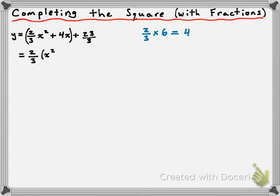Or if you aren't super comfortable doing that mentally, you could perform a division. You could take the 4 and divide it by 2 thirds to figure out what number you'd need. So doing 4 divided by 2 thirds — instead of dividing by a fraction, we turn this into multiplication. That gives us 4 times the reciprocal of 2 thirds, which is 3 over 2. So 4 times 3 over 2 gives us 12 divided by 2, which is 6. So 2 thirds times 6 gives us 4.